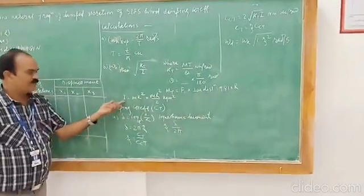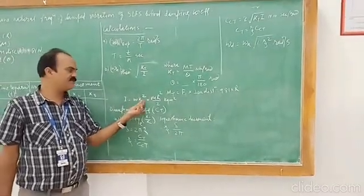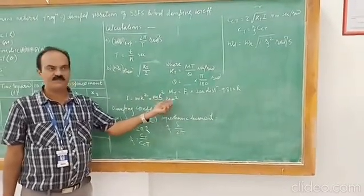Mass moment of inertia, we can calculate by m times k square, k square is r square by 2. This is in kg meter square.